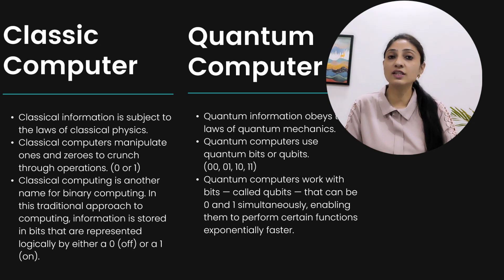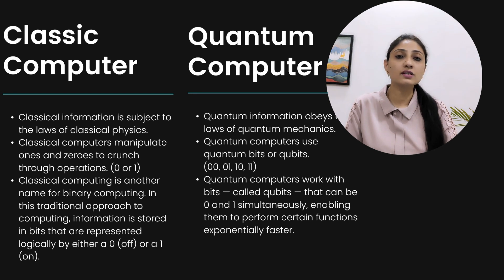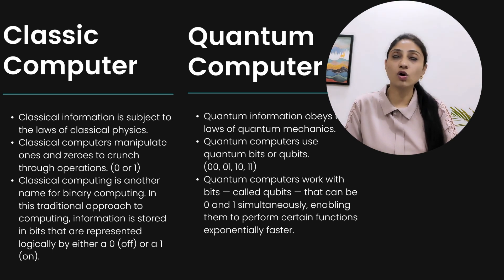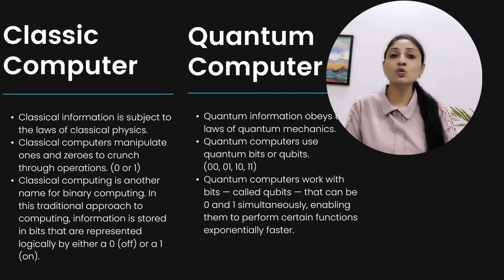Classical computers manipulate ones and zeros — they work on binary numbers, that is two bits: zeros and ones. However, quantum computers use quantum bits, or qubits, represented as 00, 01, 10, and 11 — a combination of four possible states, which represent your data. This is in contrast to classical computers, which only use zeros and ones and their strings to represent data.